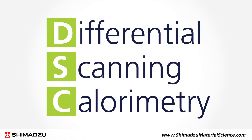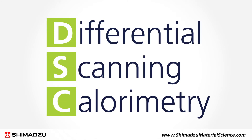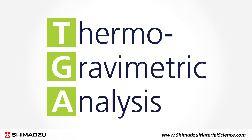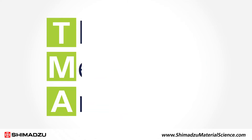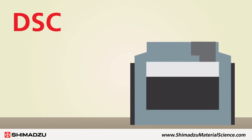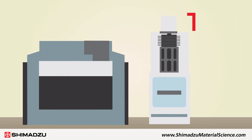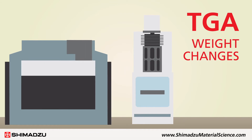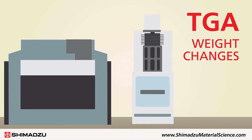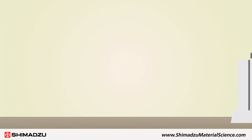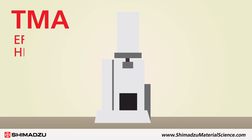Thermal methods include differential scanning calorimetry, DSC, thermo-gravimetric analysis, TGA, and thermo-mechanical analysis, TMA. DSC can be used to study phase changes, while TGA is used to measure weight changes upon heating to determine the presence of volatile compounds. TMA can reveal the effects of heat on sample physical properties such as thermal expansion.